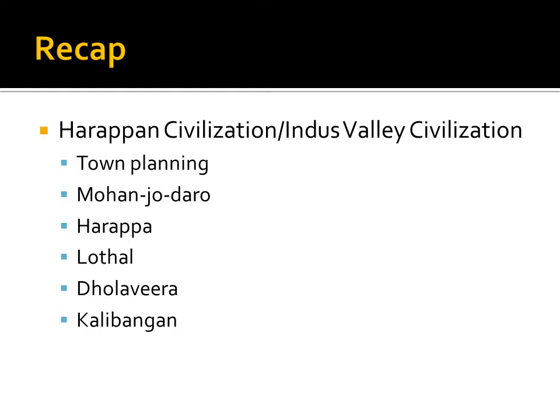We studied about Lothal, which is situated in Dhodka Taluka in Ahmedabad district of Gujarat. It was a commercial port and an industrial town in ancient times. There was a dockyard in Lothal, so it was used for loading and unloading of goods which arrived through ships. After that, we studied about Dholavira, situated in Bachao Taluka in Kach district of Gujarat. Generally, Harappan towns are divided into two parts, but Dholavira is divided into three parts: the first part is the Citadel or Fort, the second is the Upper Town, and the third is the Lower Town.